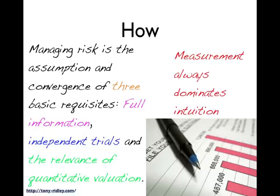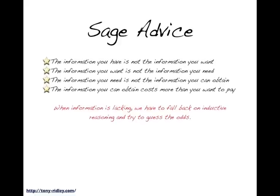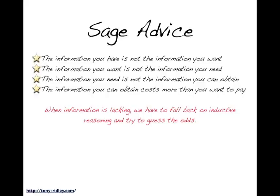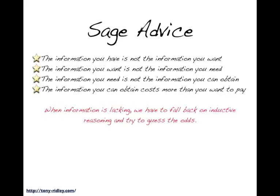Those three elements alone debunk most of the non-scientific hokum in anything deemed as a risk methodology. If you can't exhibit or strive toward those three elements, then simply you're falling short — and you should acknowledge that, or you're practising some other discipline altogether. Some sage advice I found in the research: the information you have is not the information you want; the information you want is not the information you need; the information you need is not the information you can obtain; and the information you can obtain costs more than you want to pay. When information is lacking, we have to fall back on inductive reasoning and try to guess the odds. If there is no mathematical proof, no empirical data, it essentially comes down to an educated guess — but we should be transparent and acknowledge it.